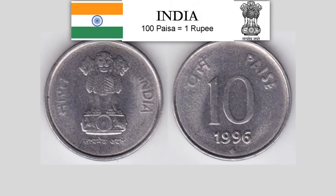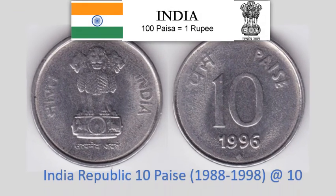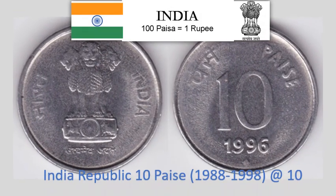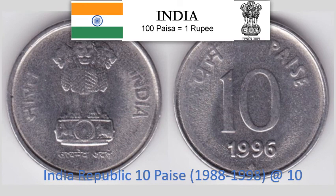India Republic 10 Paise 1988–1998. Standard circulating coin. 2 gram Stainless Steel round coin with 16 mm diameter. Krause Reference No. 40. Approximate market value Rs. 5.